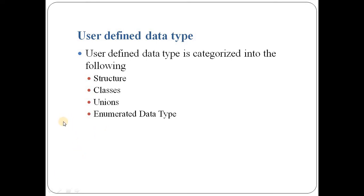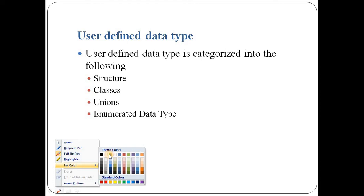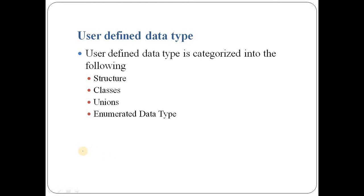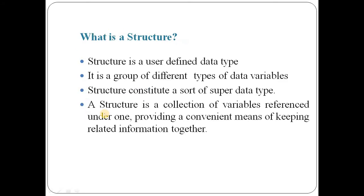Let's start with the discussion on user-defined data types in C++. These data types are very similar to the data types defined in C language, but with slight differences. C++ adds some user-defined data types: structure, classes, union, and enumerated data types. Classes is the newly introduced user-defined type in C++, while structure, union, and enumerations are already covered in C language.